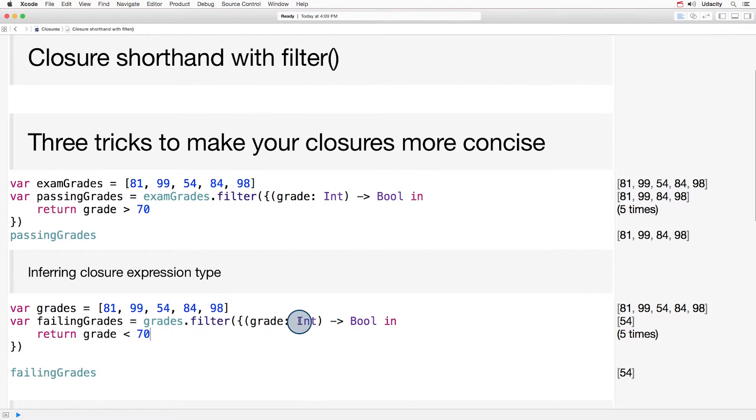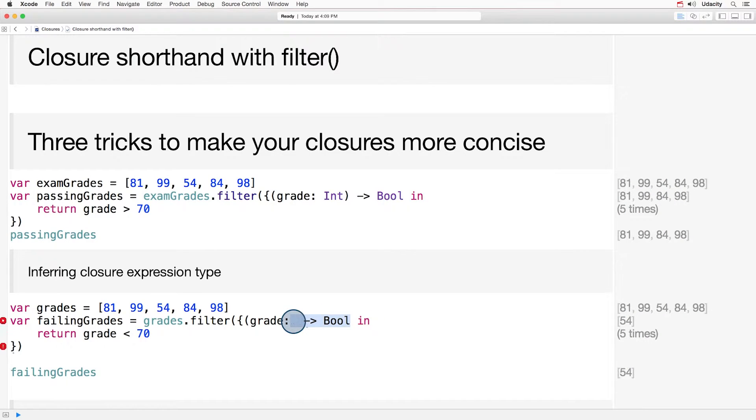So here, we can leave out the word int, and we can leave out the word bool. And over here in the sidebar, you can see that we still get the same result.